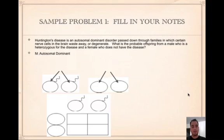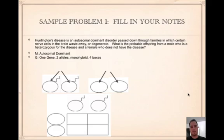First, figure out the mode of inheritance — it's autosomal dominant because they told us that. Even if they didn't say, it's usually autosomal, and you can determine if the trait is dominant or recessive by reading on. How many genes? It's one gene because we're only talking about Huntington's disease, not height and eye color. So we use a monohybrid cross with four boxes — one gene, two alleles.